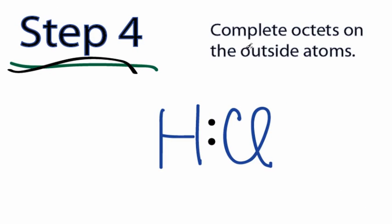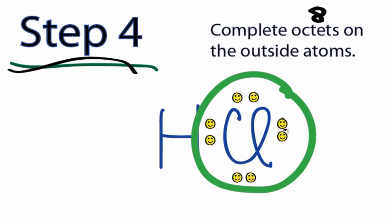Step 4. Complete the octets on the outside atoms. Octet means eight. For HCl, we have a total of eight valence electrons. One for the hydrogen, seven for the chlorine. So we've used two already to form the chemical bond. For the chlorine, we'll put four, six, and then eight. We've used all the valence electrons, and we've completed the octet for chlorine. It has eight valence electrons.